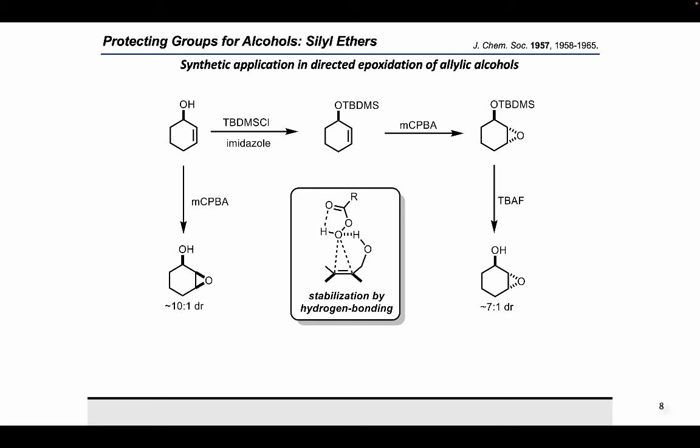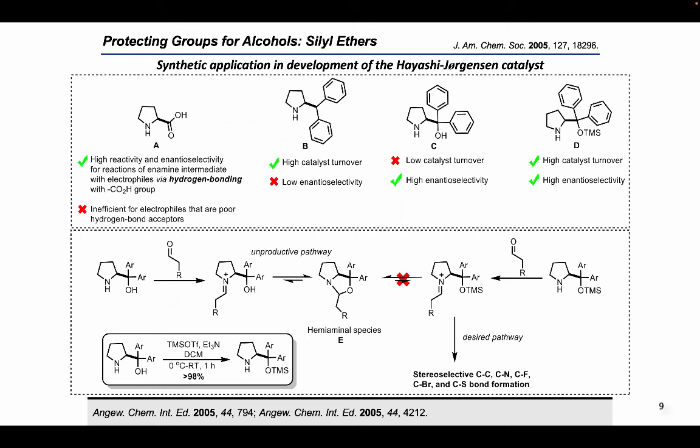One application of silyl ethers is in the epoxidation of allylic alcohols that showed facial selectivity when using mCPBA as the oxidant, in which hydrogen bonding played a key role. The hydroxy group can form a hydrogen bond with the oxygen in the epoxide, stabilizing it and hence preferring to add the epoxide to the same face as the hydroxy group. However, when the hydroxy group is masked using a bulky TBS group, steric effects direct peroxide addition to the opposite face of the hydroxy group.